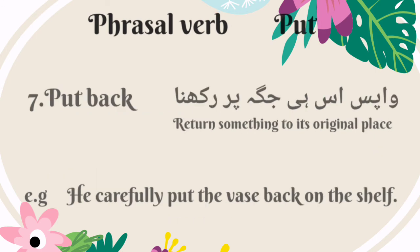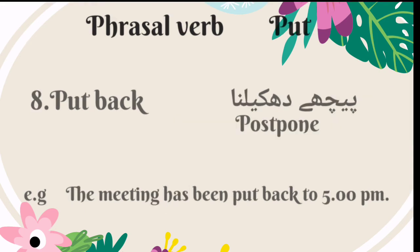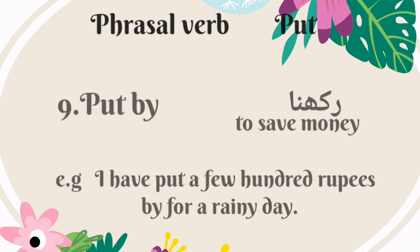The seventh phrasal verb is 'put back.' It means to return something to its original place — Urdu mein is ka matlab hai waapis ushi jaga par ushe rakna. For example: he carefully put the vase back on the shelf. 'Put back' also means to postpone — Urdu mein is ka matlab hai peechhe dakhelna. For example: the meeting has been put back to 5 p.m. The ninth phrasal verb is 'put by.' It means to save money — Urdu mein is ka matlab hai bacha ke rakna. For example: I have put a few hundred rupees by for a rainy day.